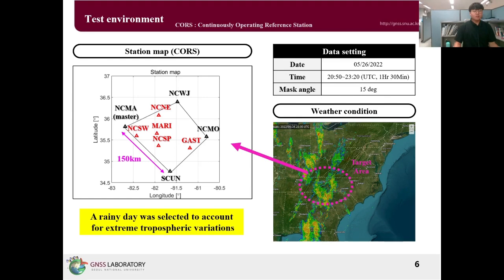To test the feasibility of the proposed method, a network was constructed using NOAA stations, and Network RTK was applied. A rainy day was selected to account for the extreme tropospheric variation.